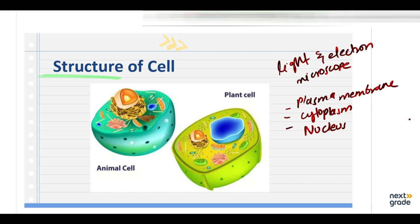In the traditional system of classification, all organisms are divided into plants and animals. The cells of plants and animals can be distinguished by the presence or absence of a cell wall — it is present in plant cells but not in animal cells. Both are highly complex cells with a distinct nucleus where the chromatin material is bounded by a membrane, and they are called eukaryotic.